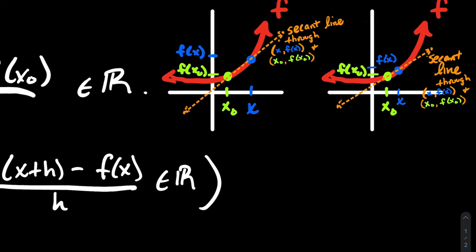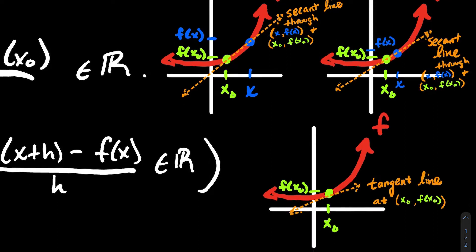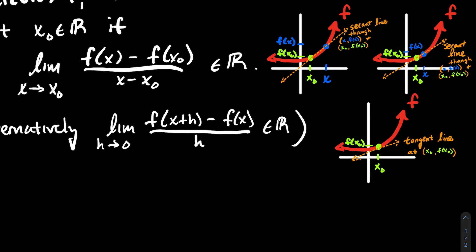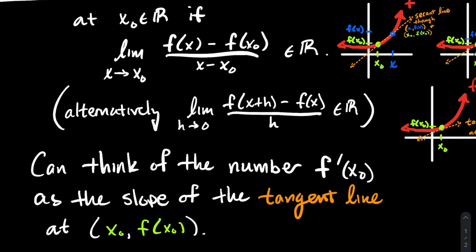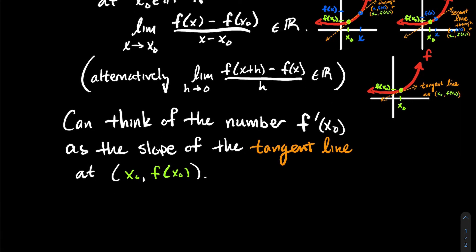What should the limit be? Well, the limit is what happens when you actually get to the green point x₀. In the last frame of this animation, when you finally reach the green point, what you end up with is the tangent line to that point. When you drag that blue point toward the green point, we're tracking the slope of the secant line. If the limit exists, that slope becomes the slope of the tangent line — and that is the derivative. f′(x₀) is the slope of the tangent line.